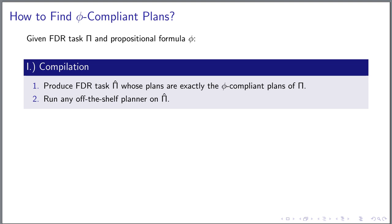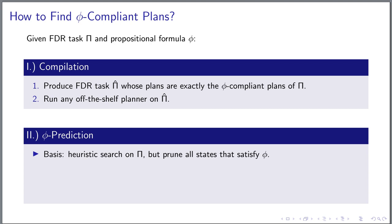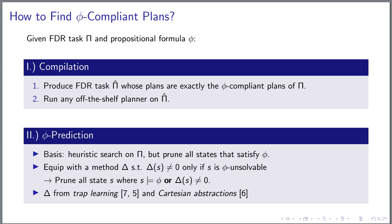Besides those compilation approaches, we also looked into how to integrate avoid conditions into the planner's engine directly. And the basis for this builds forward heuristic search running on the original task, without the avoid condition, where we enforce phi-compliance by pruning during that search all states that satisfy phi. To improve upon the simple baseline, we considered methods to identify phi-unsolvable states that do not satisfy the avoid condition themselves and prune these states as well.